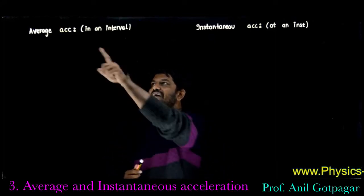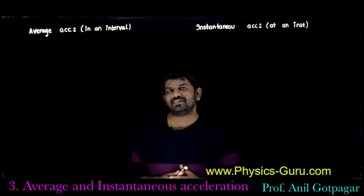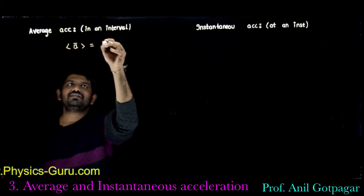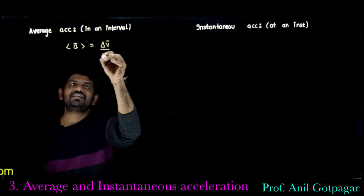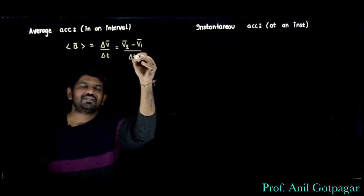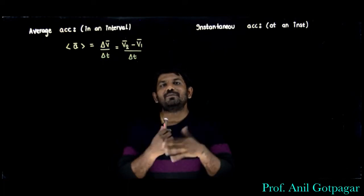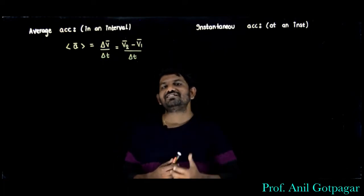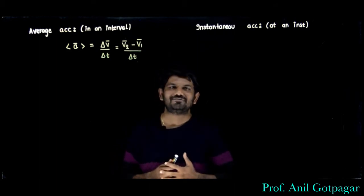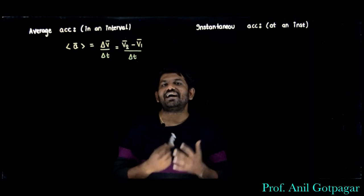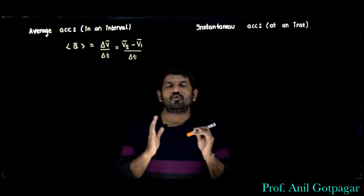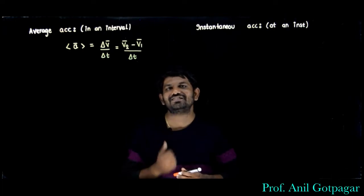Average acceleration is a vector quantity. It is nothing but change in velocity divided by time interval — that is final velocity minus initial velocity divided by time interval. Average acceleration is similar to average velocity, where average velocity was change in displacement divided by time. So average acceleration is change in velocity divided by time. Its direction is the same as that of change in velocity, i.e., v2 minus v1.